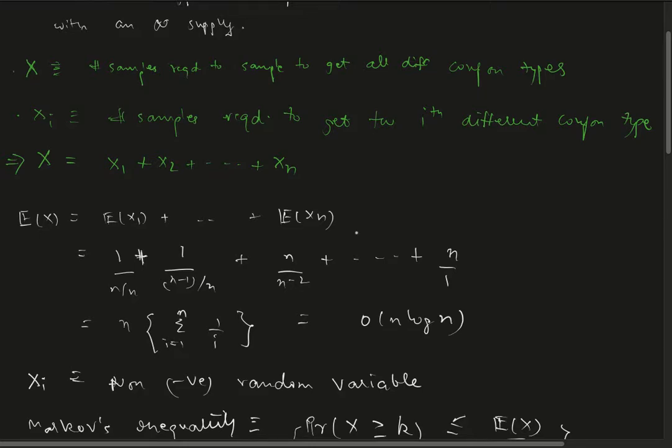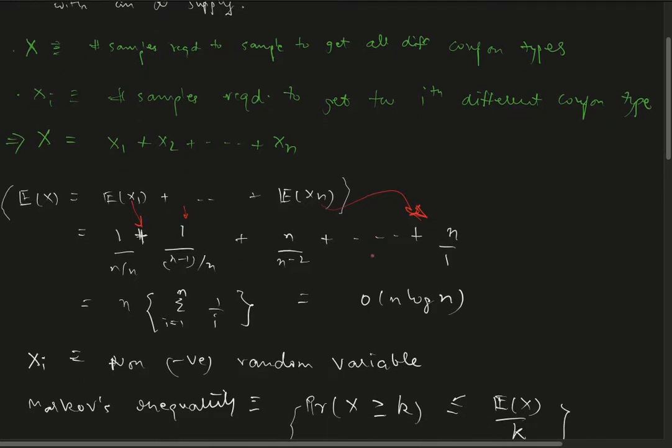Using linearity of expectation, we write E(X_1) is obviously one, E(X_2) is n/(n-1), up to E(X_n) is n, using the formula for geometric random variables.